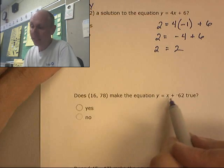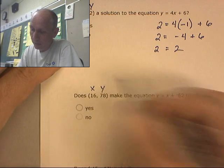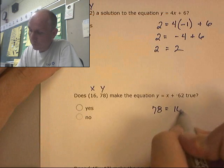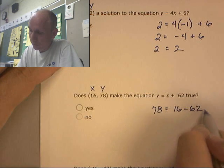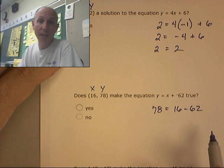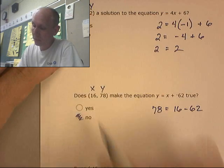Does (16, 78) make this equation true? That's x, that's y. 78 equals 16 minus 62. I'm not even going to go any further with that because it's obviously wrong. 16 minus 62 is going to be negative. So that's a no.